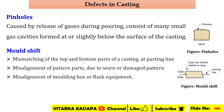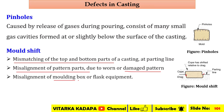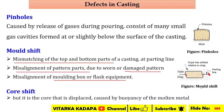If there is any misalignment in the cope and drag placement, a mismatch occurs resulting in a shape where the top and bottom parts of the casting are offset. Causes include misalignment of parts, a damaged pattern, and misalignment of the molding box or flask equipment. This defect is related to the parting line and can be easily identified by inspecting the casting outcome.